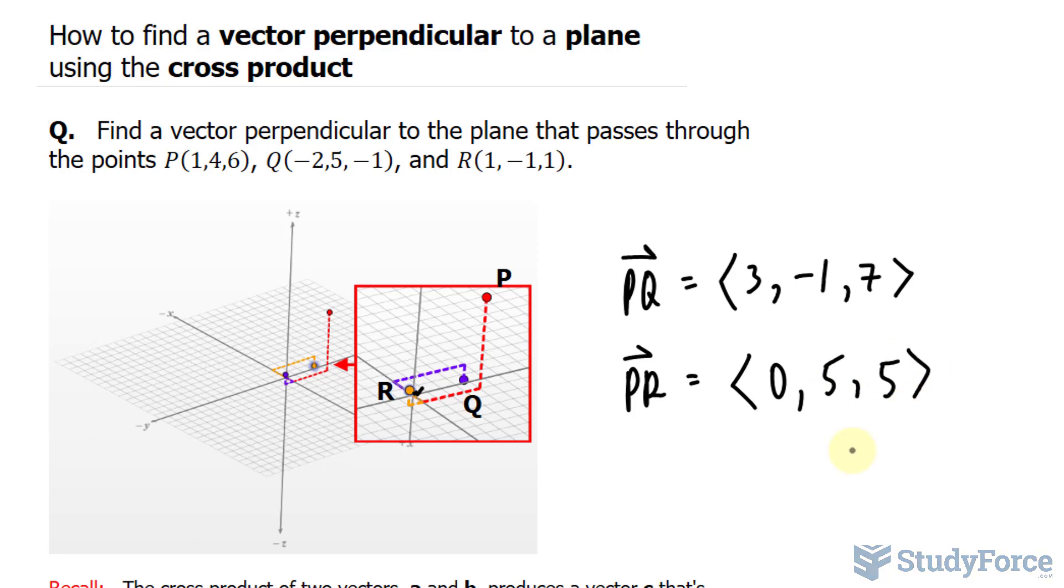There's a reason why I'm finding the vectors that connect from point P to Q and from point P to R. Because now, if I find the cross product of these two vectors,